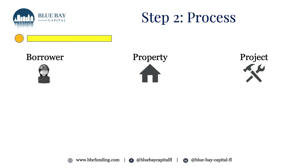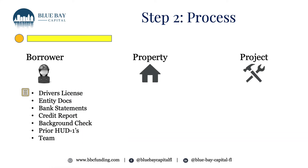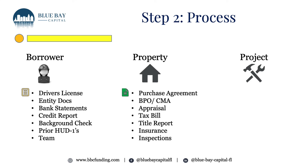Now let's dive into documents to review during processing for each category. For the borrower: driver's license, entity documentation, bank statements, credit reports, background checks, and prior HUD-1s — if they claim a lot of experience, prior HUD-1s are an excellent way to vet that — as well as their team. For the property: the purchase agreement executed by both seller and borrower, a BPO or CMA (broker's price opinion or comparable market analysis, though not required), the appraisal, the tax bill, the title report provided by the title company, property insurance meeting your requirements, and inspections.